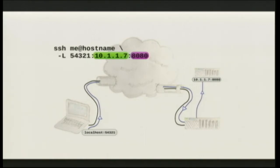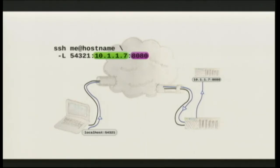We can tell SSH to allow other hosts to connect to the forwarded port using the GatewayPorts setting. Normally, SSH is only going to allow connections from our local machine — wherever you make this connection, that's the only place you'll be able to connect to that port. But if we turn on the GatewayPorts option, SSH will actually bind that to all interfaces, and then allow other hosts to connect to the port on the local machine and forward those as well.